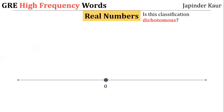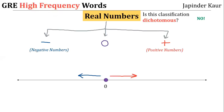In contrast, tell me: is the classification of real numbers based on their position with respect to zero on the number line dichotomous? The answer is no, because in this case three possibilities exist. A number can lie to the left of zero, or it can be on the right of zero, or it can be zero itself.